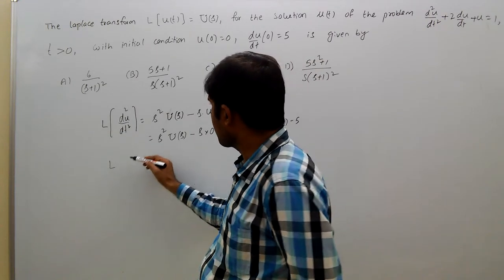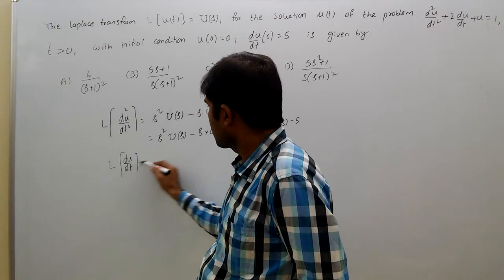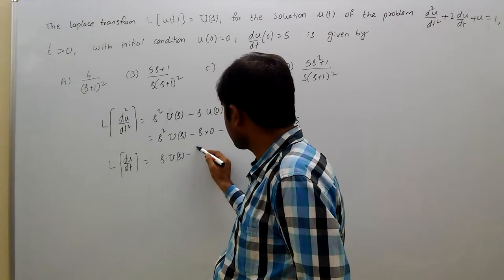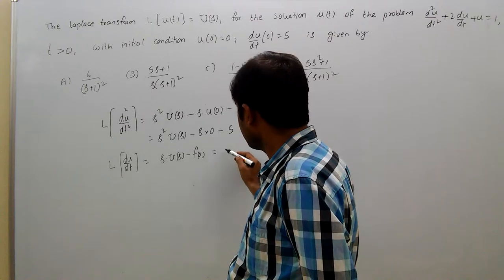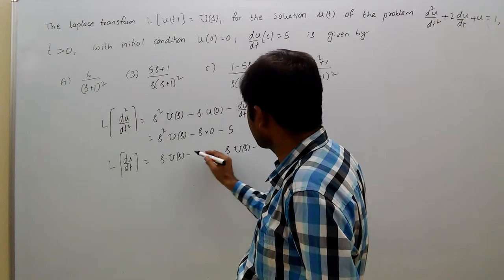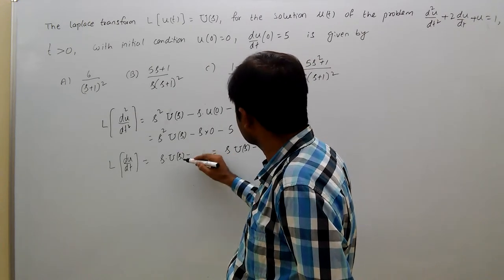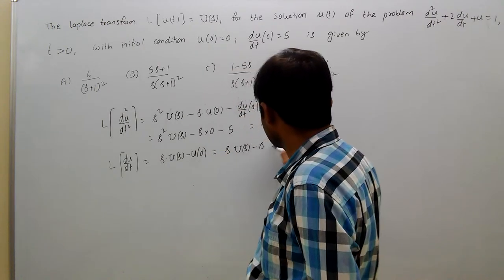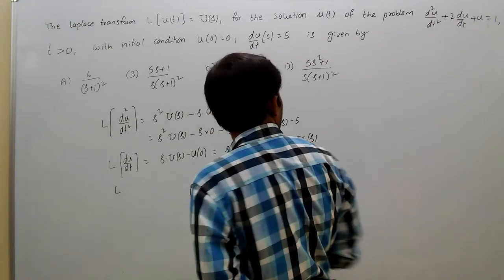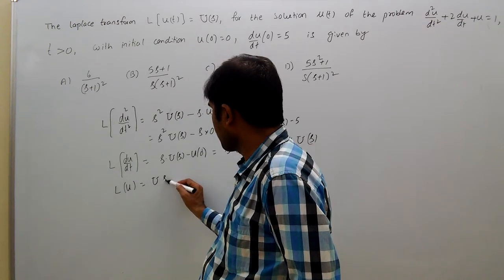Then the Laplace transform of du by dt equals s times U(s) minus u(0), which equals s times U(s) minus 0, that equals s U(s). Then the Laplace transform of u equals capital U(s).